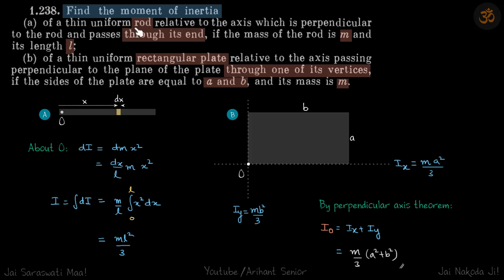Find the moment of inertia of a uniform rod if the axis is passing through one of its ends, and the moment of inertia of a rectangular plate where the axis is passing through one of the vertices. The mass and length of the rod is given, and sides and mass of the rectangle is also given.